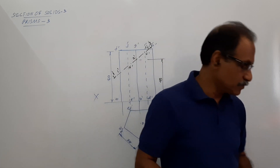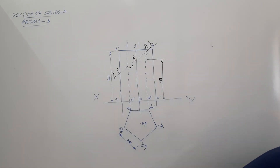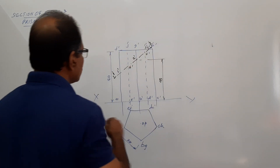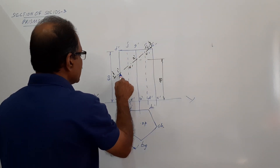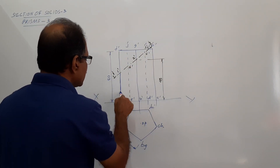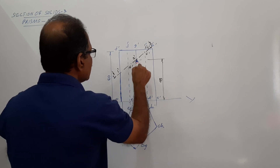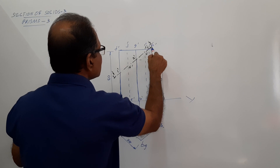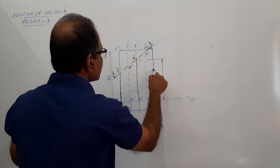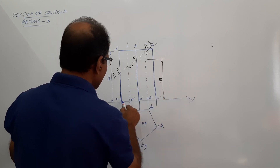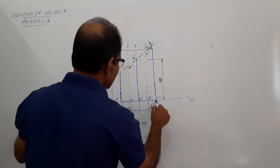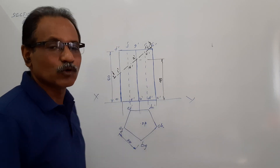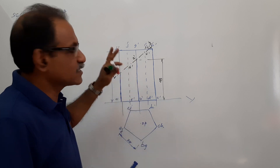I hope you understood. Now you have to darken the remaining portion — darken the lines. This is darkened, this is darkened, this is darkened, this is darkened. What does it indicate? It indicates that which is kept — the lighter one is removed. That completes the sectional elevation.